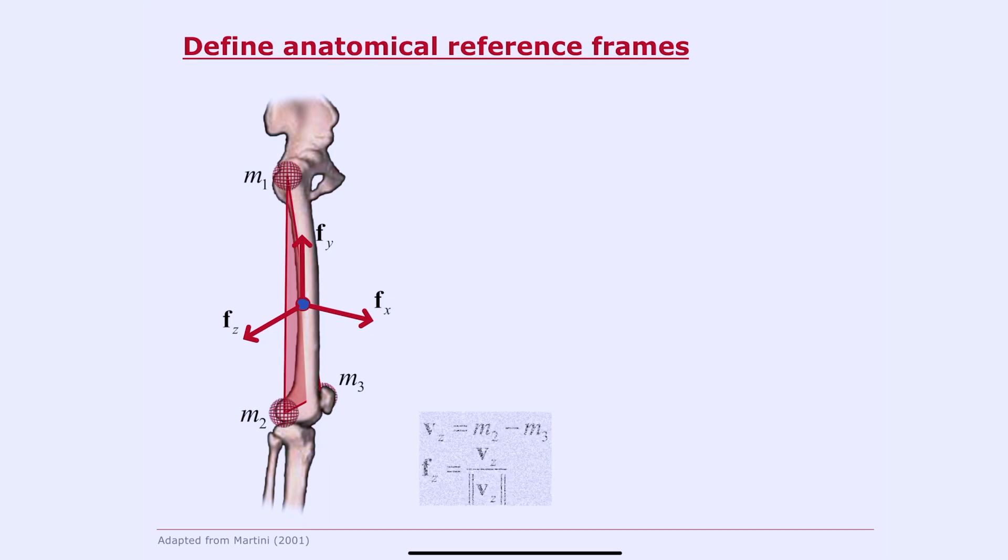So how would we come up with Fx, Fy, and Fz? Well, here is one strategy. Let's start off by taking a vector from M3 to M2. So that's M2 minus M3. There is our vector Vz. And we'll normalize it to unit length, and we'll call that Fz. So that's one of the three basis vectors.